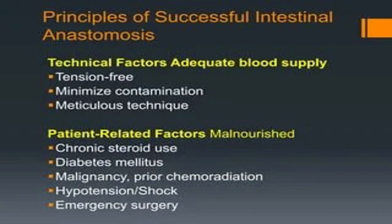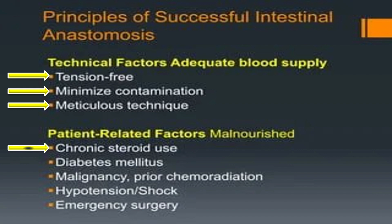Technical factors include adequate blood supply, tension-free anastomosis, minimized contamination, and meticulous technique. Patient-related factors which can affect bowel healing include malnourishment, chronic steroid use, diabetes mellitus, malignancy, prior chemoradiation, hypertension, shock, and emergency surgery.